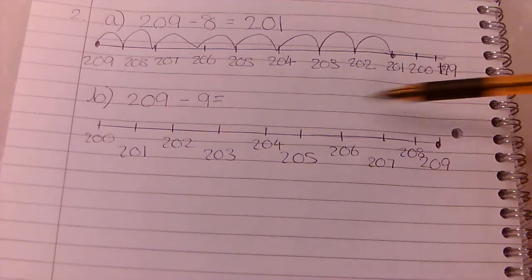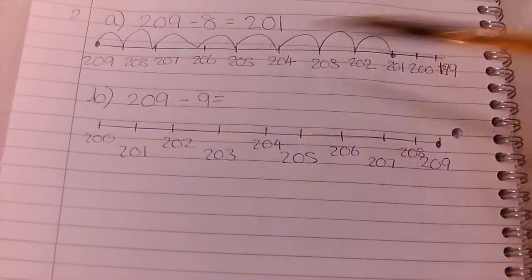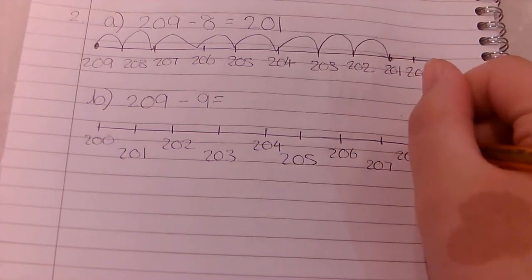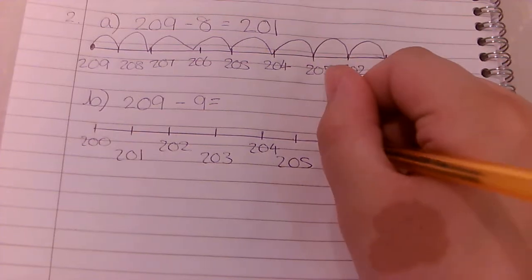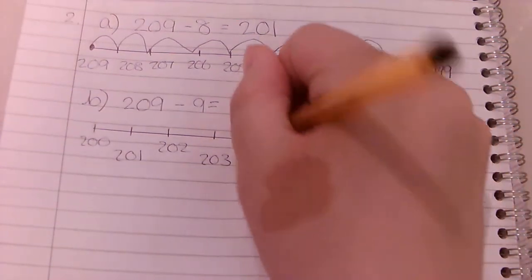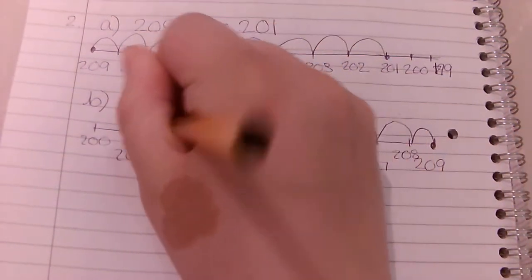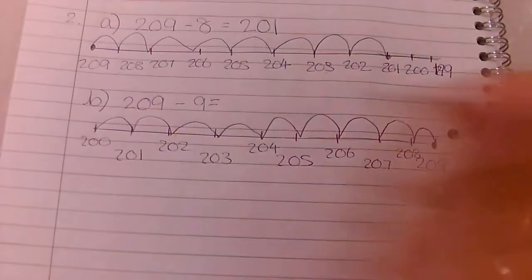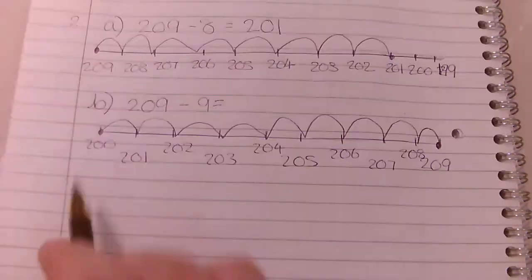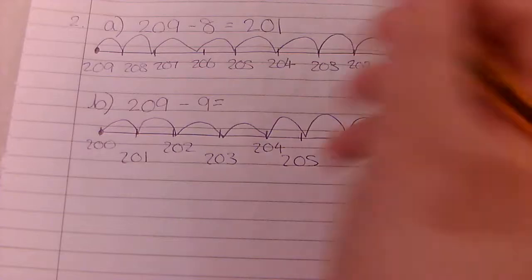So just check: 209, 208, 207, yeah it's getting smaller this way. So I want my leaps to go this way. Now we're going to do 9 leaps, so let's count: one, two, three, four, five, six, seven, eight, nine. And we end up here. What number do we end up at? We end up at 200.